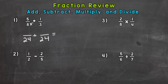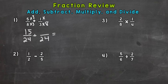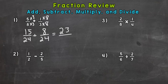8 times 3 gives me 24, so in order to get an equivalent fraction, I need to do the same thing to the top. So 5 times 3 is 15, meaning 5 eighths is equivalent to 15 twenty-fourths. Now for 1 third: 3 times 8 gives me that 24, so I need to do the same thing to the top — 1 times 8 is 8. Now that I have the renamed fractions with a denominator of 24, I can add my numerators. 15 plus 8 is 23, and you always keep your denominator the same, which is 24.